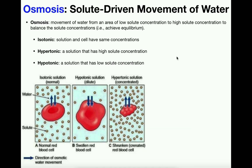For example, if we're considering a cell, the membrane would be the plasma membrane of the cell. The two sides would be inside the cell, which we call intracellular, and outside the cell, which we call extracellular. If for a given ion or particle there's a differing concentration on either side of that membrane, we can have net movement of water, which is osmosis.